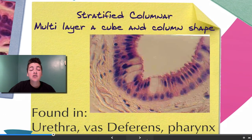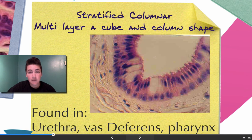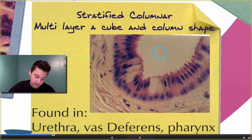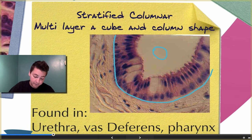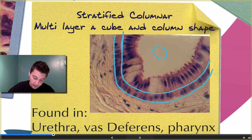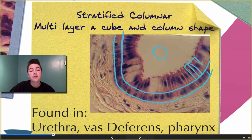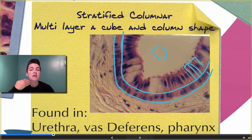Stratified columnar consists of column-shaped cells in multiple layers. The bottom layer of cells tends to be more cube-shaped, and the top ones are more column-shaped. This is found in the urethra, which purveys urine out of the body; the vas deferens, which is used for purveying sperm; and the pharynx, which is part of the respiratory system connecting the nose, the mouth, and the throat.